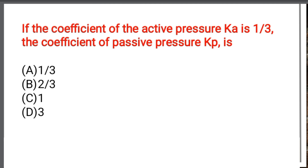Next question: If the coefficient of active earth pressure Ka is 1/3, the coefficient of passive earth pressure Kp is — Option A: 1/3. Option B: 2/3. Option C: 1. Option D: 3. The correct answer is Option D: 3, because Kp = 1/Ka.